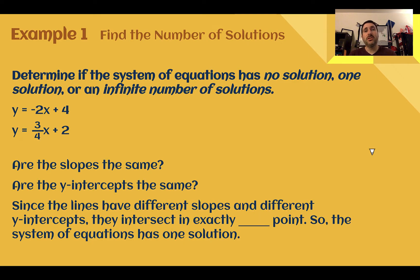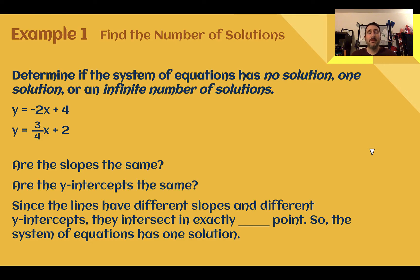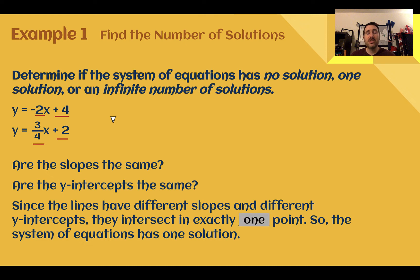Example one: find the number of solutions. Determine if the system of equations has no solution, one solution, or an infinite number of solutions. We have y equals negative 2x plus 4 and y equals three-fourths x plus 2. First we ask ourselves: are the slopes the same? If they are, it's either no solution or infinite. If they're different, automatically it's one solution. I see two different slopes and two different y-intercepts, but the two different slopes mean they're going to intersect at one point. So this system would have one solution.